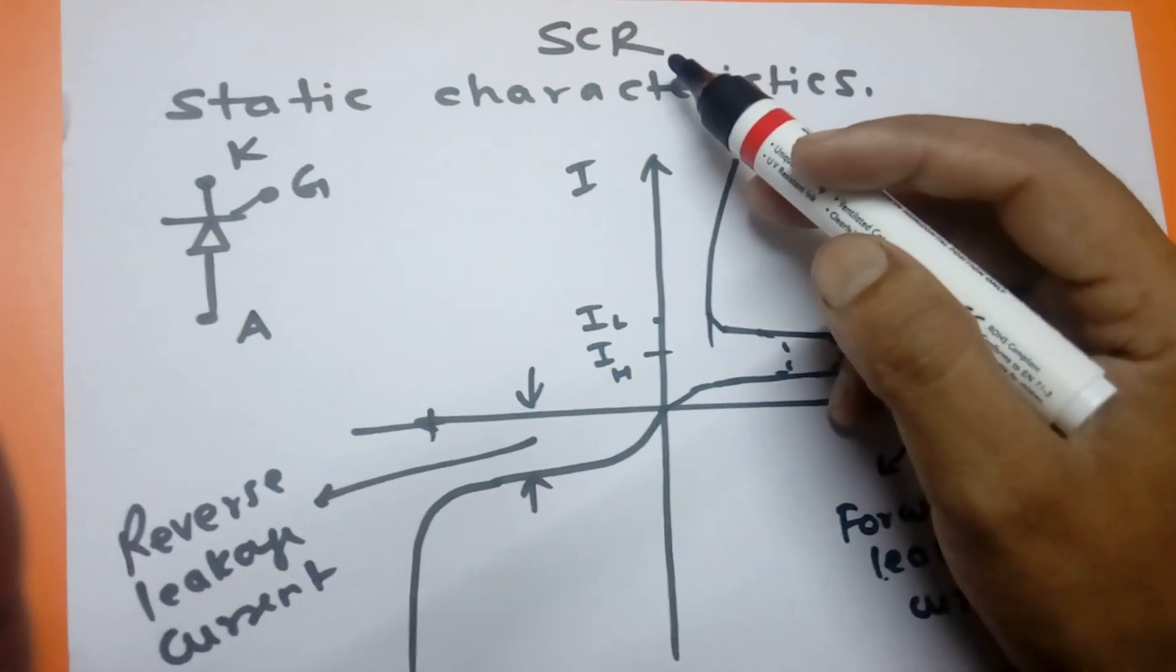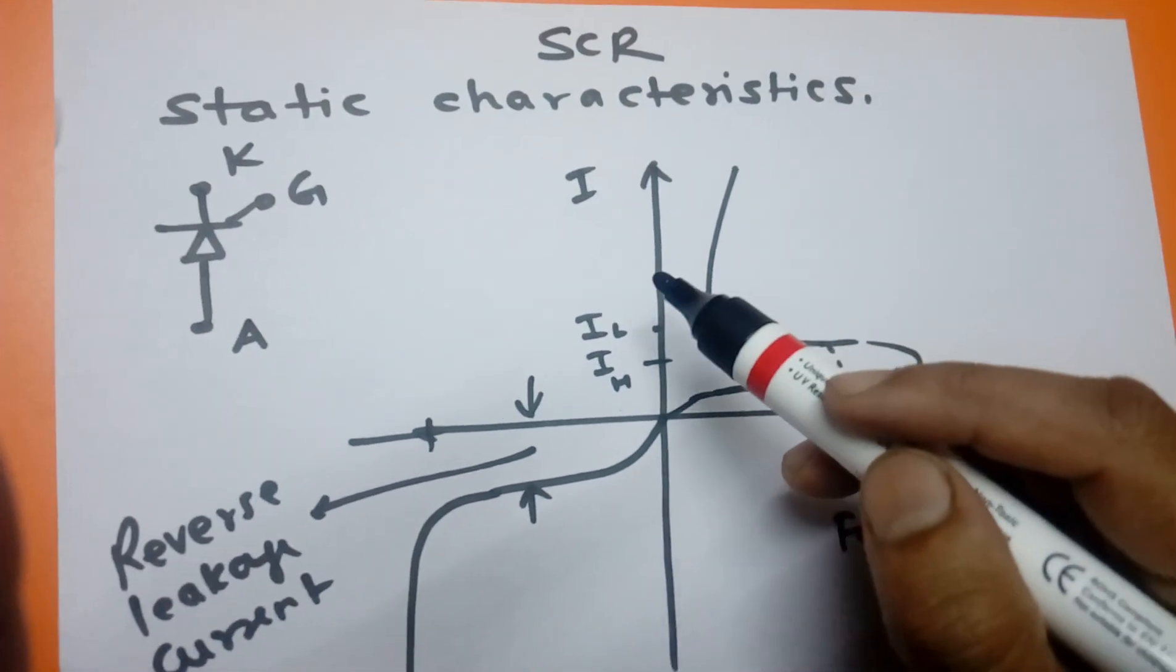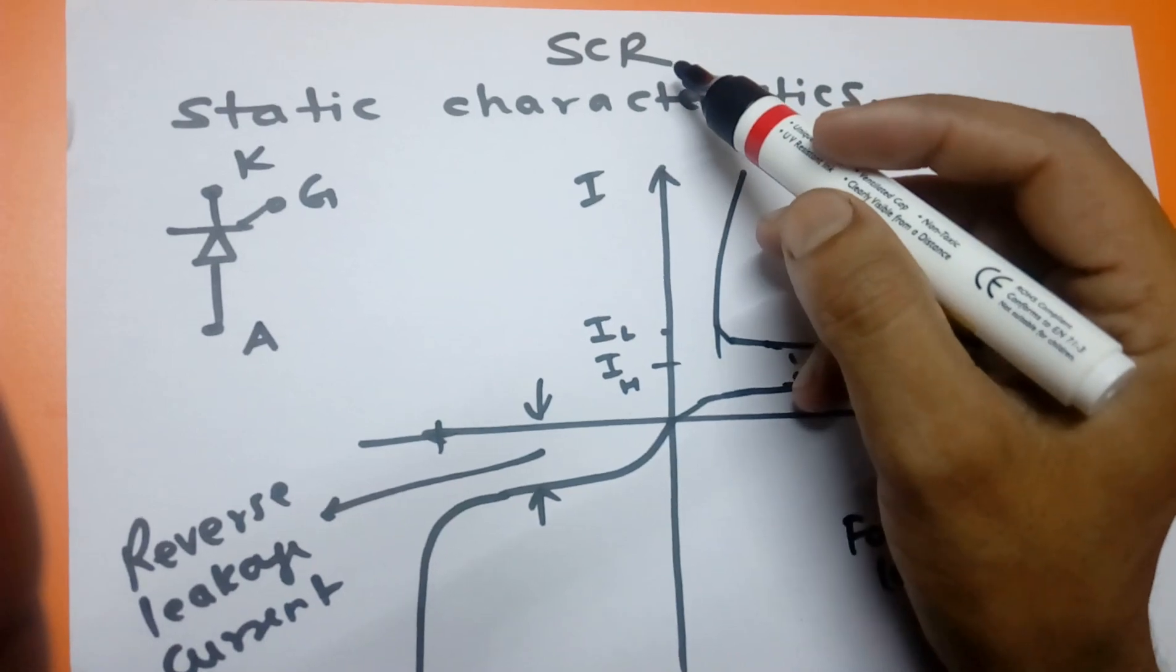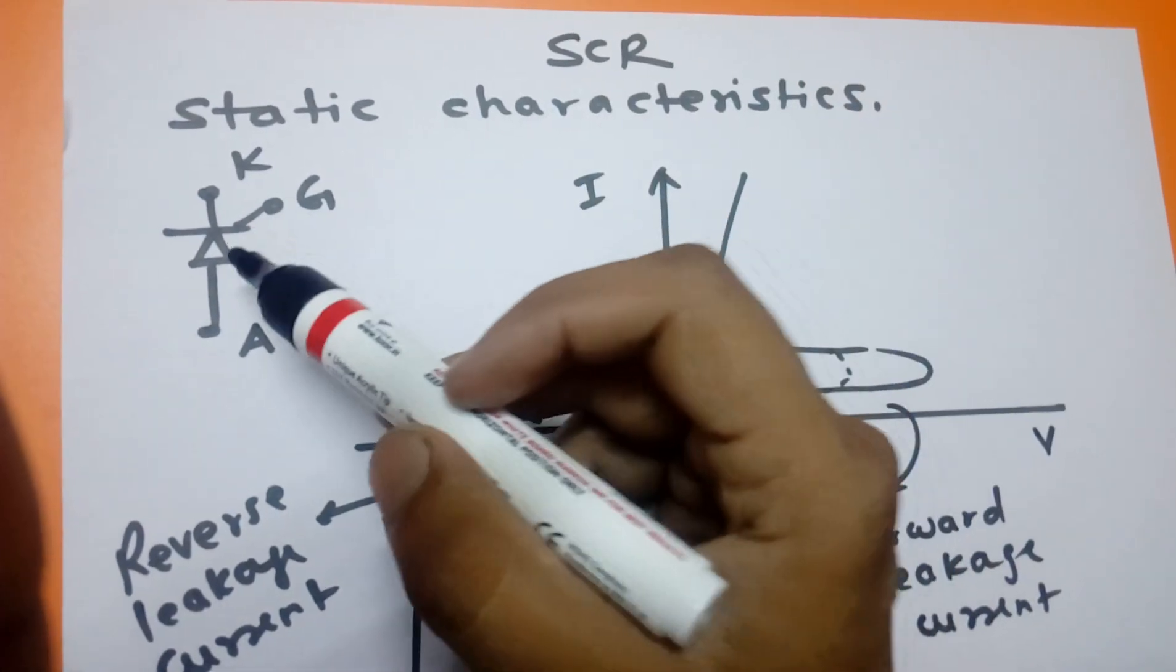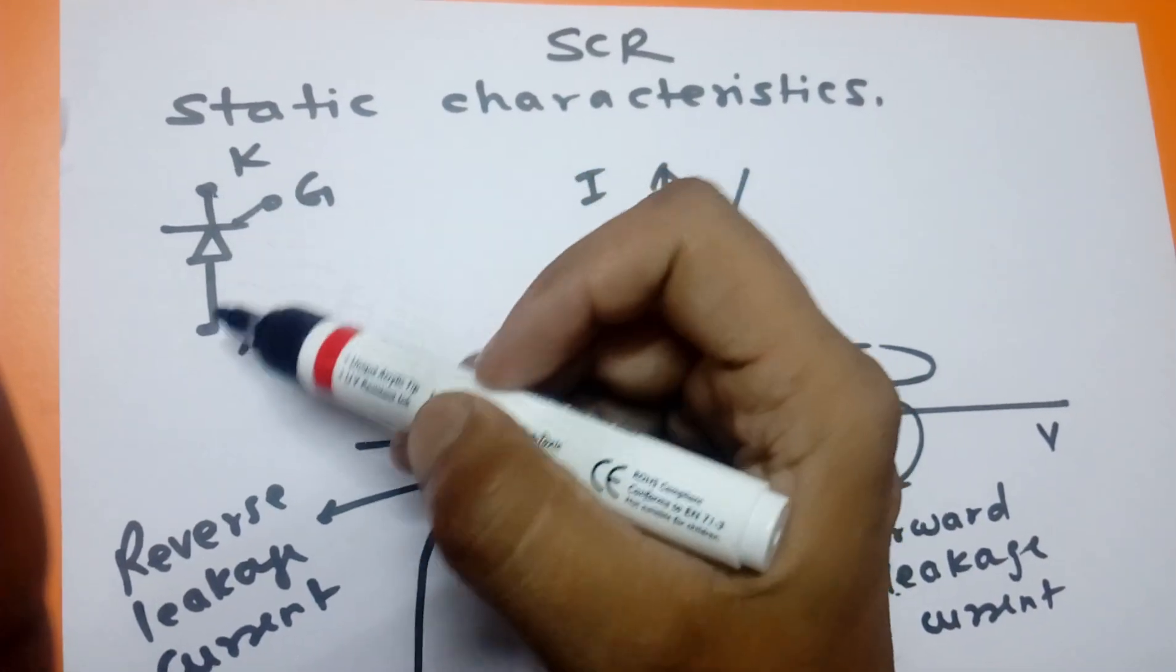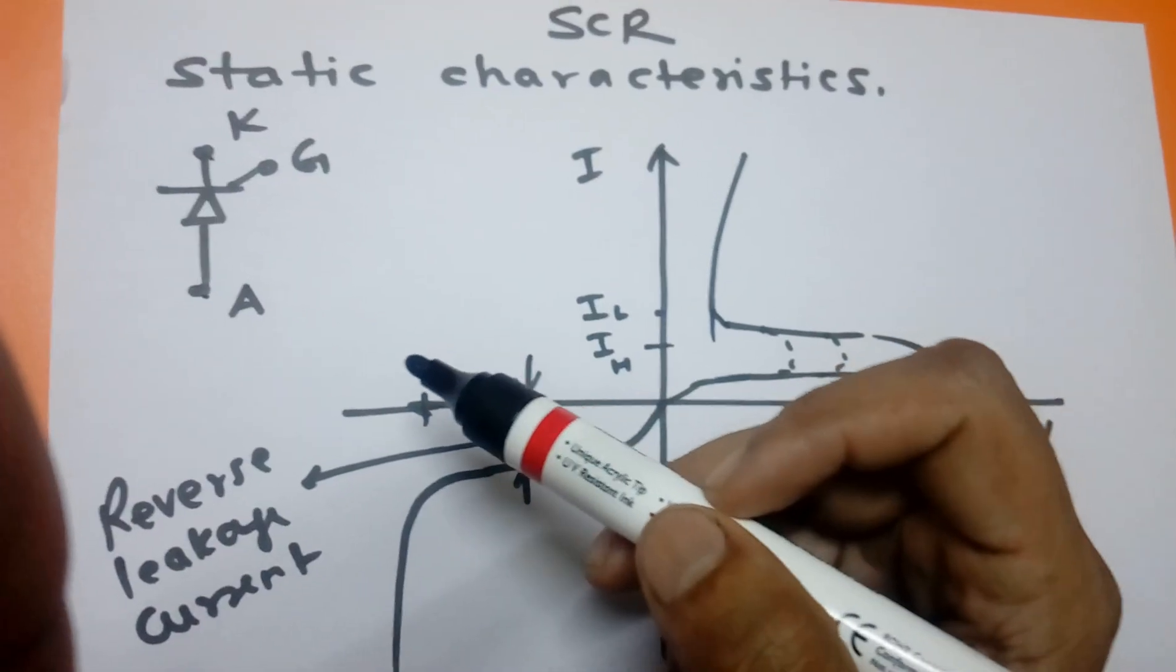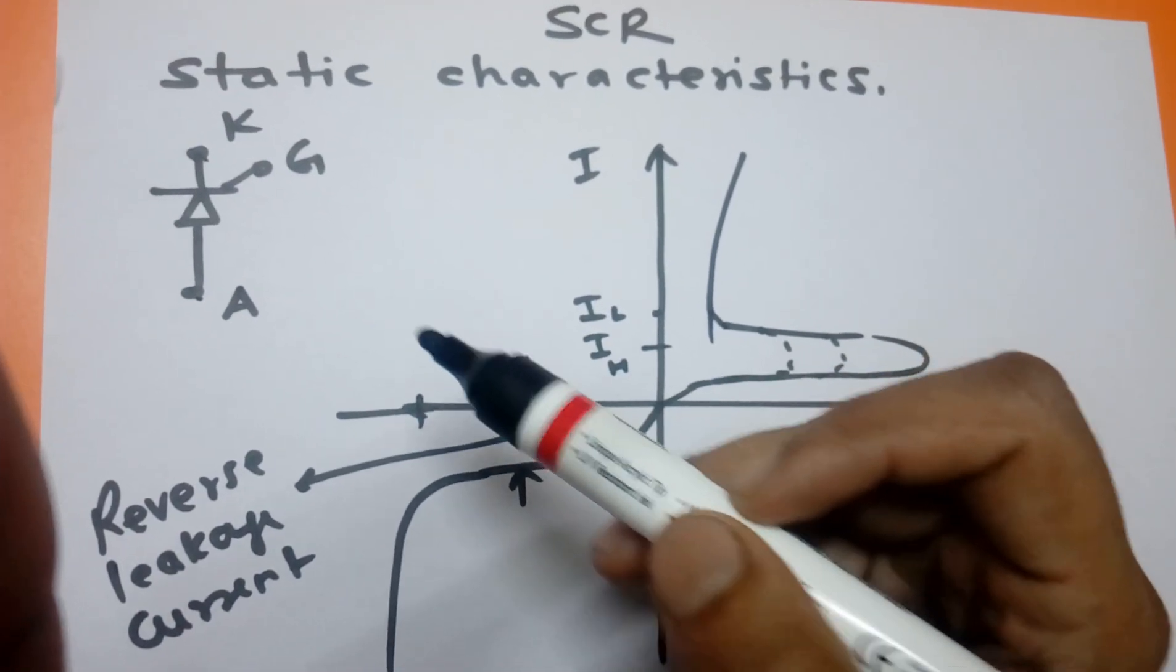Hello friends, today we'll discuss the SCR static characteristic. SCR is also called a thyristor. It has three terminals: cathode, anode, and gate. When the SCR conducts, current will flow from anode to cathode when the gate is turned on by a triggering pulse.